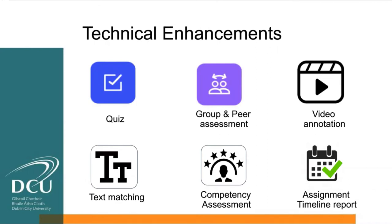First, the participation credits plugin allows lecturers to give marks to students for having completed their peer assessment task, whereas previously they were relying on the Moodle algorithm to make a blunt assessment of students' quality of work. This new plugin makes grading more transparent for both students and lecturers. The second plugin was live allocation, which enhanced peer assessment functionality by allowing students to submit their work late and still have it allocated for peer assessment. Previously, students would be locked out of the peer assessment process if they didn't meet the deadline.